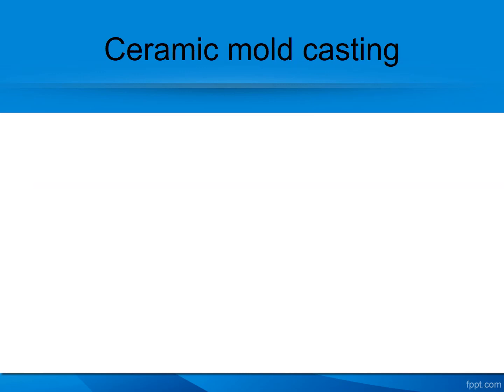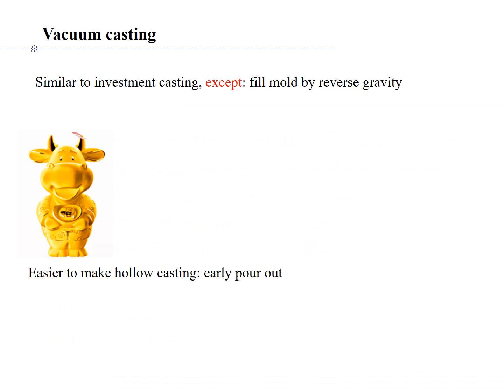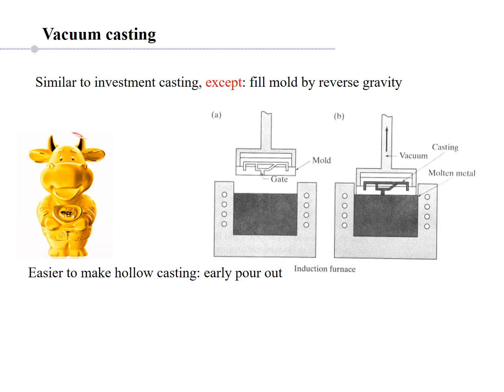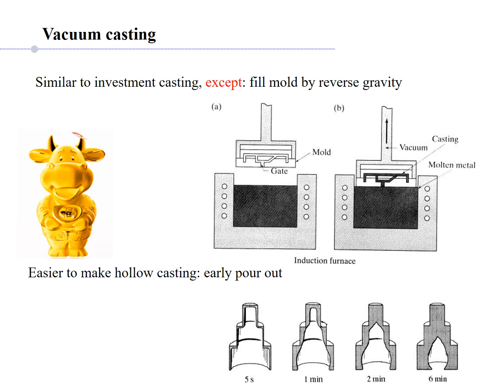Next is vacuum casting, which is similar to investment casting, but here we create a vacuum inside the pattern. Once the vacuum is created, after a set time — one minute, two minutes, up to six minutes — the low pressure created automatically draws the molten metal inside. Hollow parts or hollow castings can be made using the vacuum casting technique.